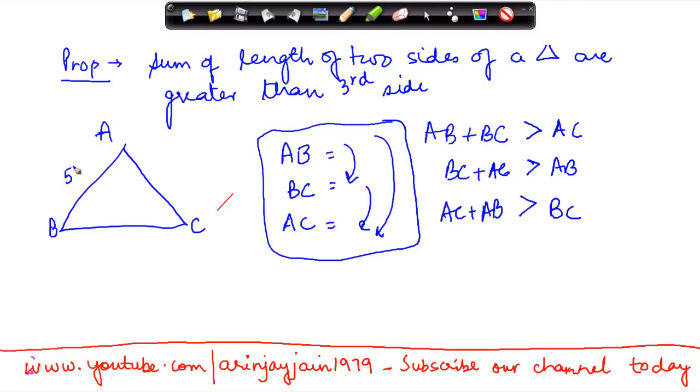Say suppose here you have 5 and here you have 6, then the third side cannot be, so the sum of two sides is equal to 5 plus 6, so the third side AC has to be less than 11 centimeter, right.